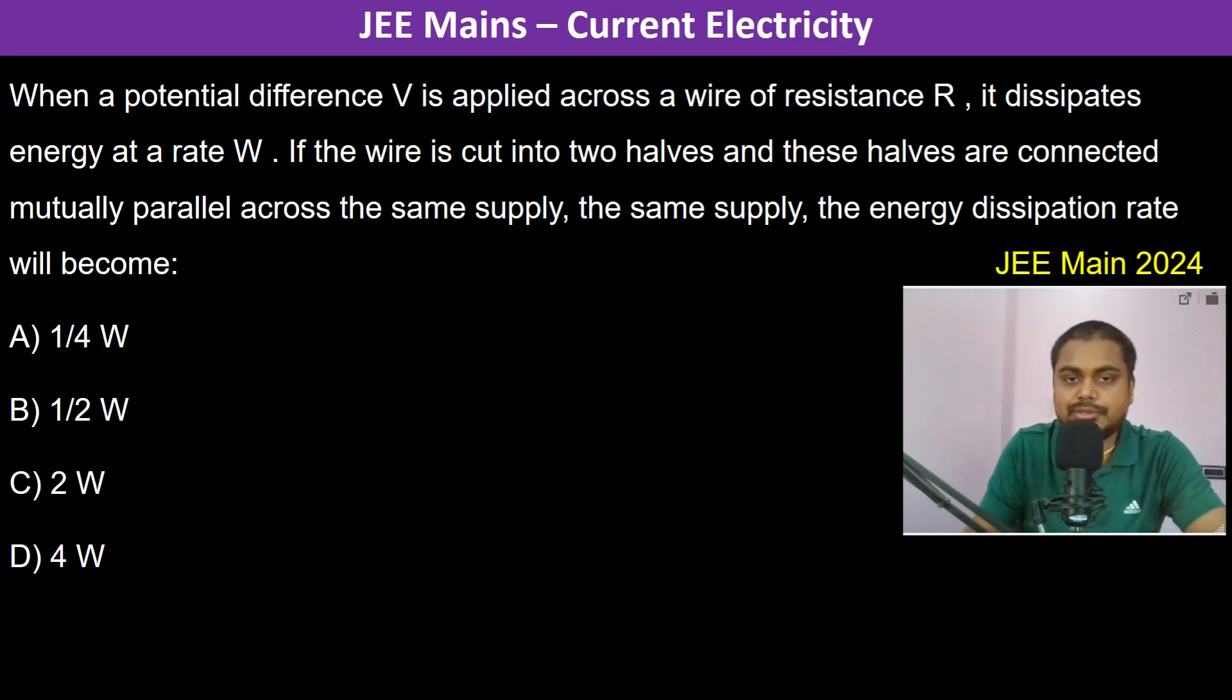When a potential difference V is applied across a wire of resistance R, it dissipates energy at rate W. So W is equal to V squared by R. This is the first condition.